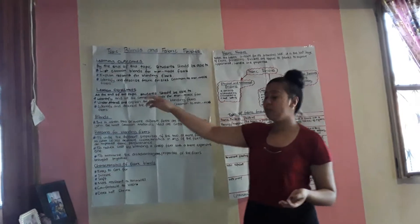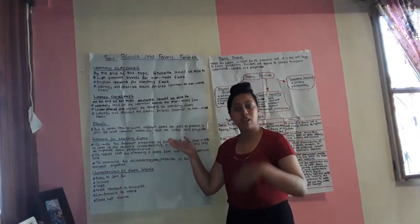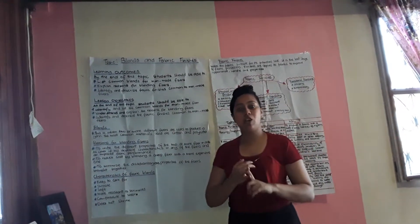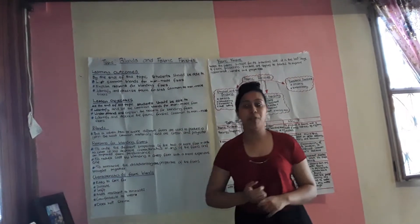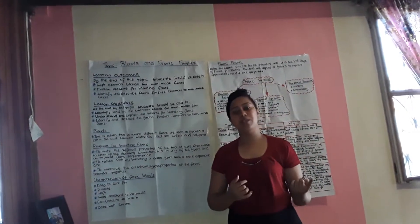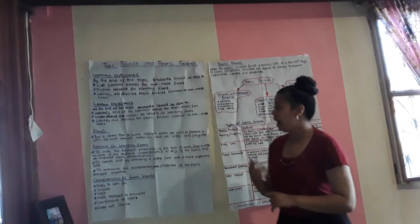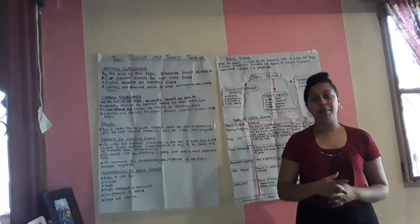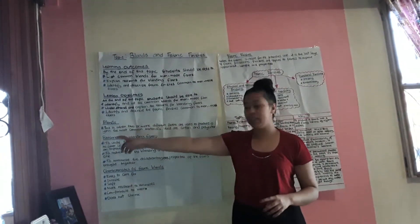Moving on to the lesson objectives: at the end of this topic, students should be able to identify and list the common blends for man-made fibres, understand and explain the reasons for blending fibres, and identify and describe the fabric finishes common to man-made fibres. Firstly, we'll start off with blends.